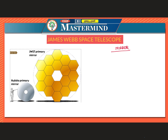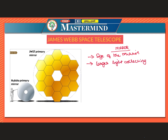Another major improvement of James Webb Space Telescope over Hubble is the size of the mirror. You can see the comparison in the picture — JWST has a much bigger primary mirror. A larger mirror means a larger light-collecting area. In space observations, light is information, so larger light-collecting capability means more information.